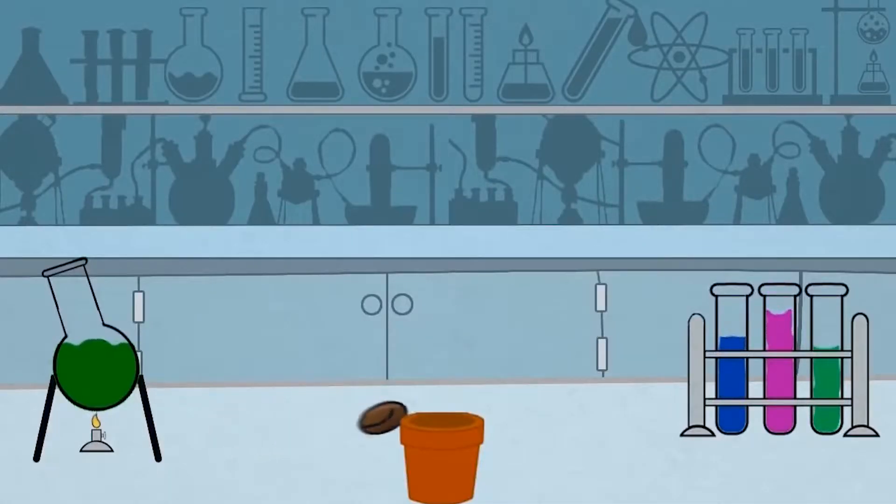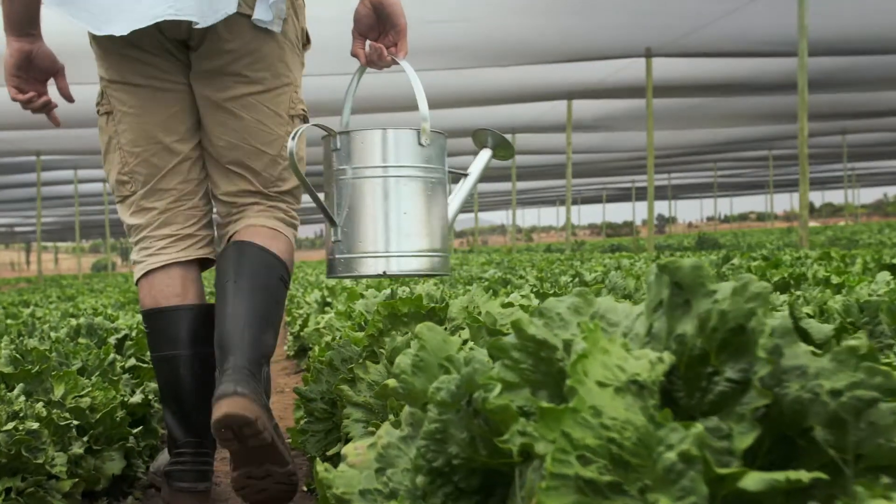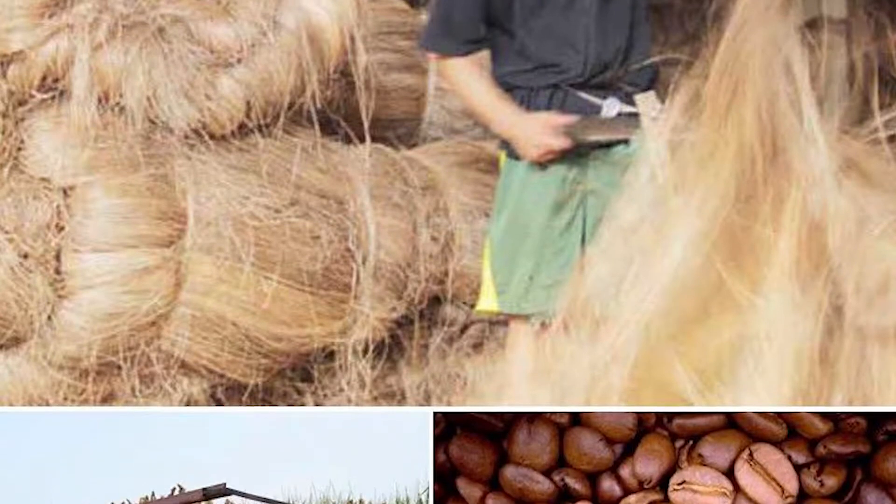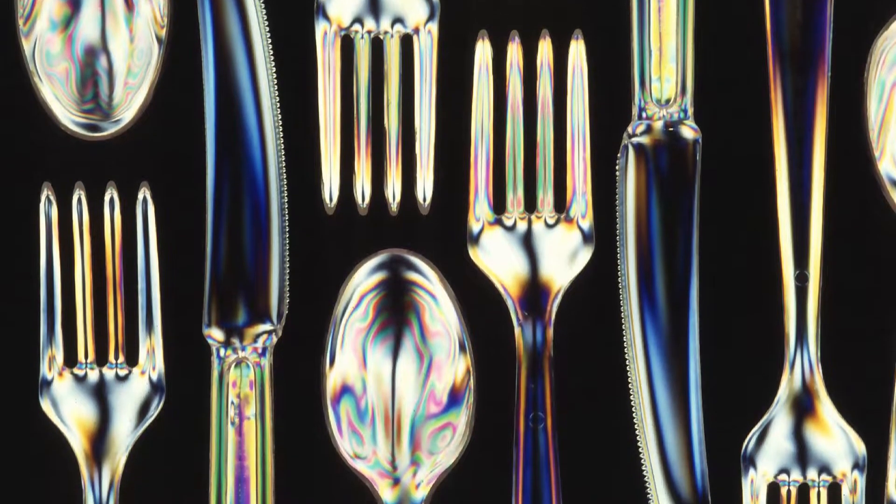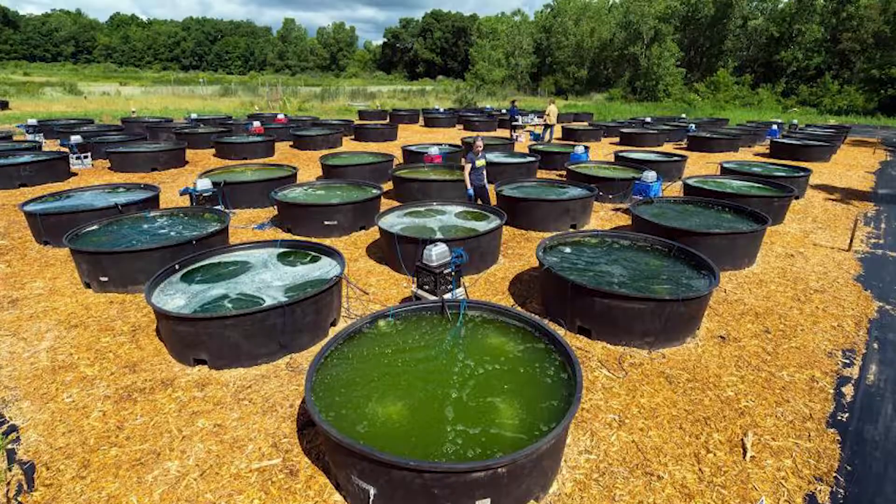But apart from healthcare, biotechnology operates in three other major industry areas: crop production and agriculture, non-food industrial uses of crops, and environmental products like biodegradable plastics, vegetable oil or biofuels.